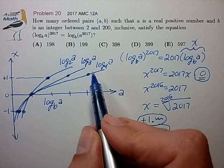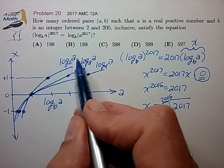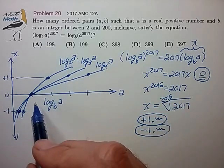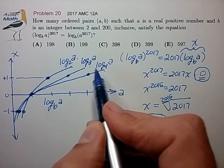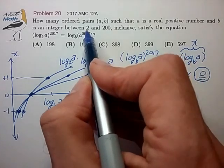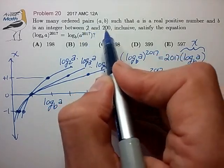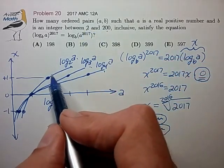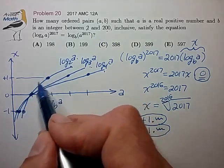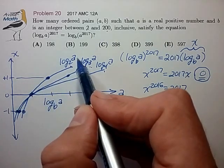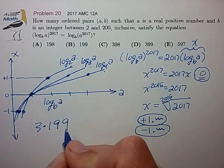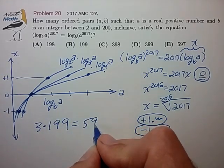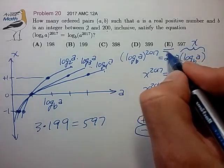So all totaled, the number of ordered pairs (b,a) is equal to 3 times the number of base values that we're given. Now we're given base values from 2 to 200, so that's 199 values, each of which has three different solutions in a and b. So the total number of ordered pairs is simply 3 times 199, 597 for choice E. Thank you.